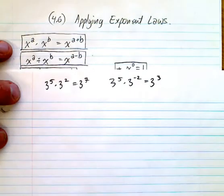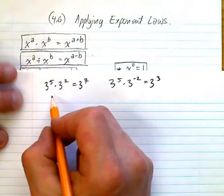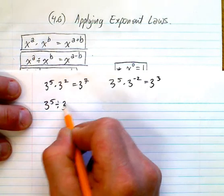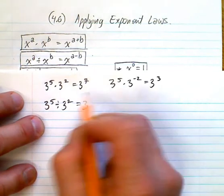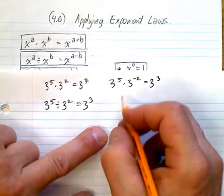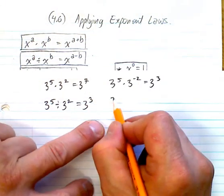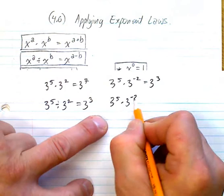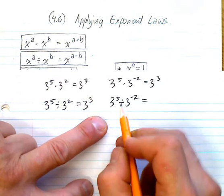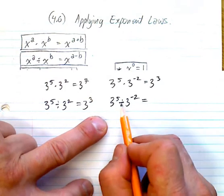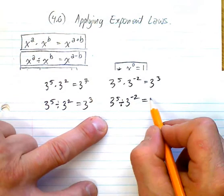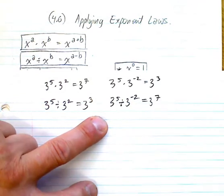For the quotient law, if I have 3 to the power of 5 divided by 3 to the power of 2, that's 3 to the power of 5 minus 2, which is 3. And similarly if you use a negative exponent, divided by the same base: 5 minus a negative 2 is a plus, so it's actually 3 to the power of 7.